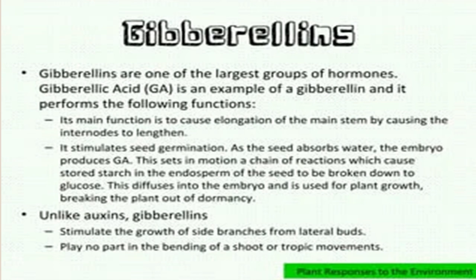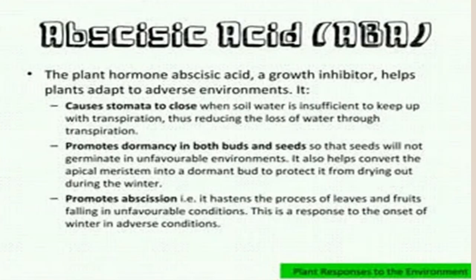There are similarities between gibberellins and auxins, but gibberellins play no part in the bending of a shoot or tropic movement. When we look at the different tropisms, you'll see that certain parts of the plant start bending — what causes that bending is the auxin, not the gibberellins. A helpful reminder: the 'G' in gibberellins can remind you of seed germination, and it also causes elongation of the stem.